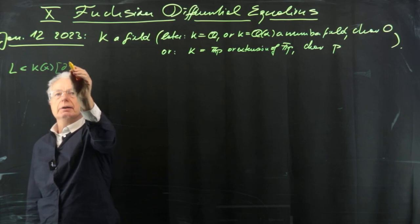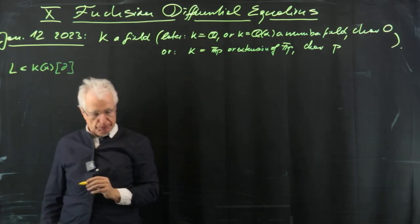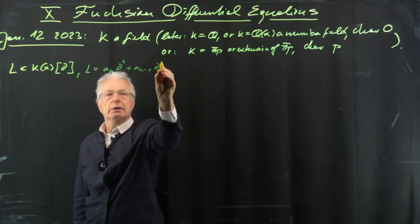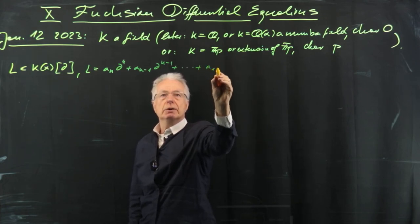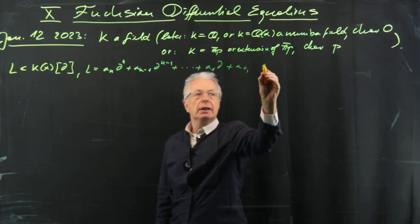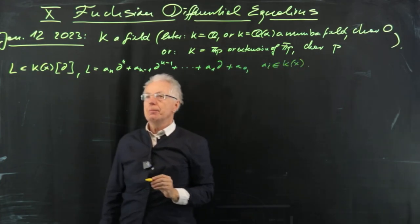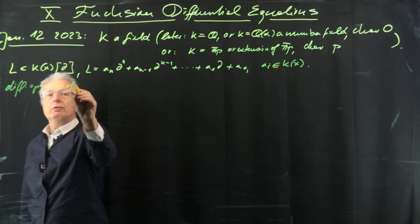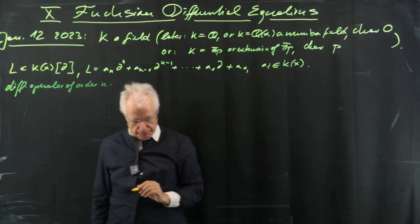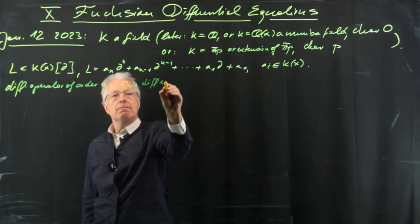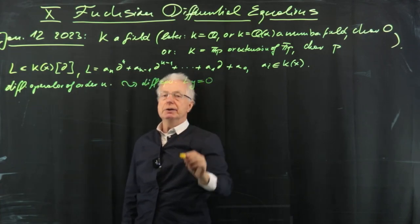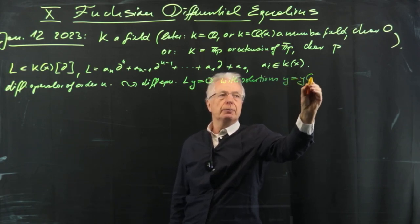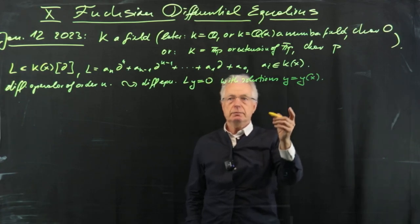We work with polynomial or rational coefficients. We could also think of power series but we don't need it. As always, L equals a_n ∂^n + a_{n-1} ∂^{n-1} + ... + a_1 ∂ + a_0, with a_i in k[x]. This is our differential operator of order n. From this we get the differential equation Ly = 0, and we are interested in the solutions y = y(x).